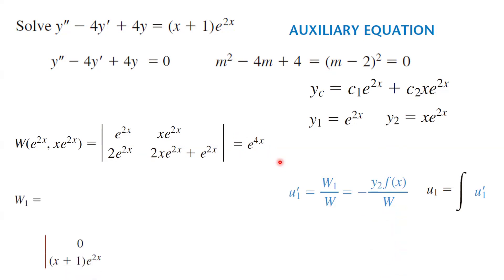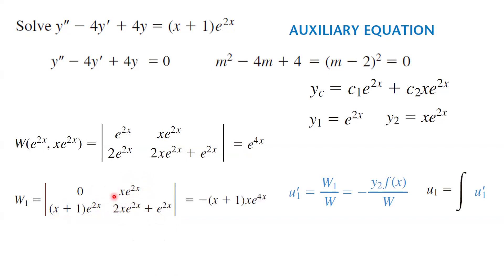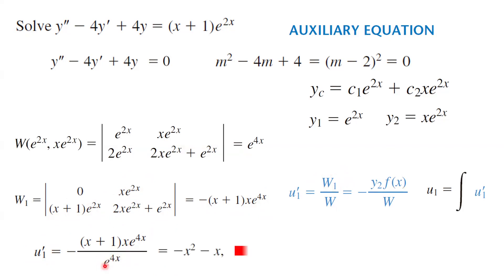Now let's calculate W1, which is the determinant of 0, f of x — which is (x + 1)*e^(2x) — and y2 and its derivative. When you do the calculation, this term is 0, so you have negative x*e^(2x) times (x + 1)*e^(2x), which gives e^(4x) in the denominator. So u1 prime is W1 divided by W. We know the Wronskian is e^(4x), so these cancel out, and you end up with negative x squared minus x. Then u1, which is the integral of negative x squared minus x, is negative one-third x cubed minus one-half x squared. So we have found u1.